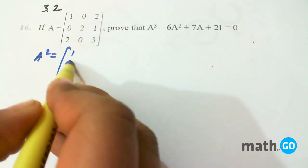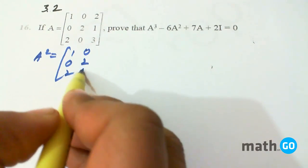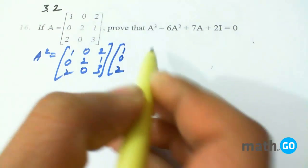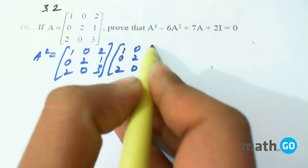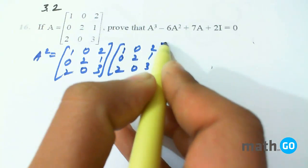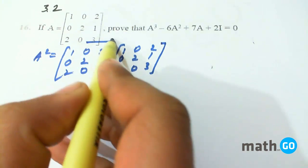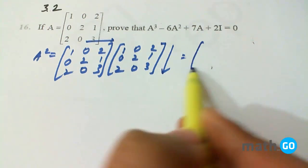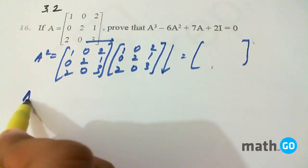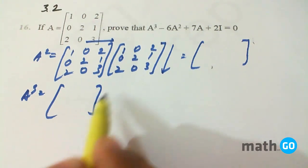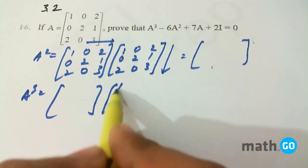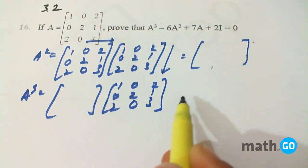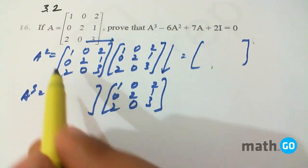A² is the matrix multiplied by itself - we multiply the matrix into the same matrix. As usual, we do the multiplication and we can find this. Similarly, A³ will be this matrix multiplied by A. Now if you put the values of A²...